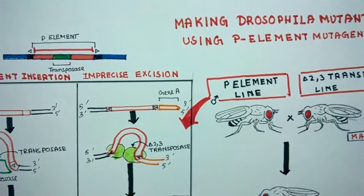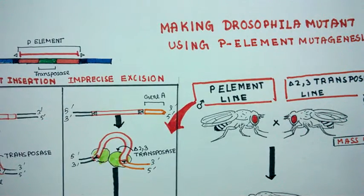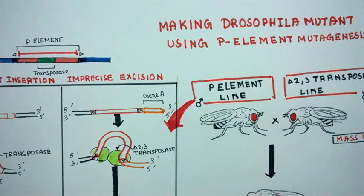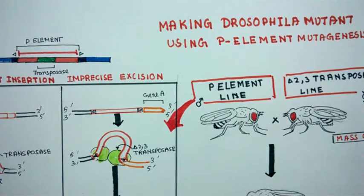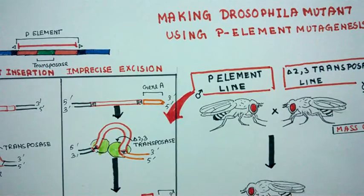The whole process is actually imprecise excision. That means excision of the P-element which is quite imprecise, and it would take a portion of a chunk of the gene along with it, and thus creating a deletion mutation.